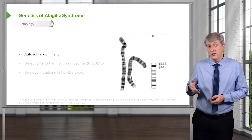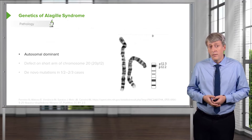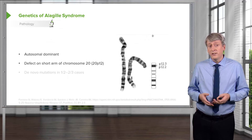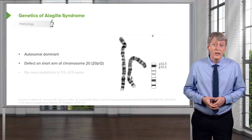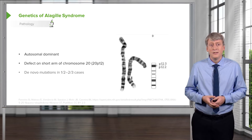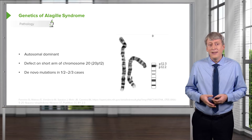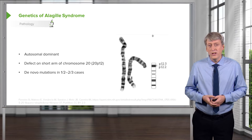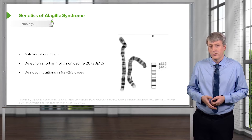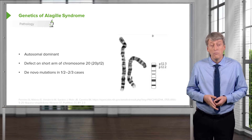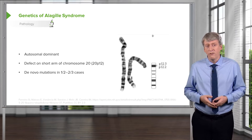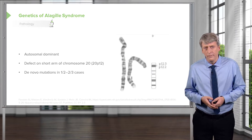This disease is autosomal dominant. It's a defect in the short arm of chromosome 20 on 20p12. They usually have de novo mutations — that is to say, the parent doesn't have Alagille Syndrome; this is a new mutation. But absolutely, you want to get a family history as well.